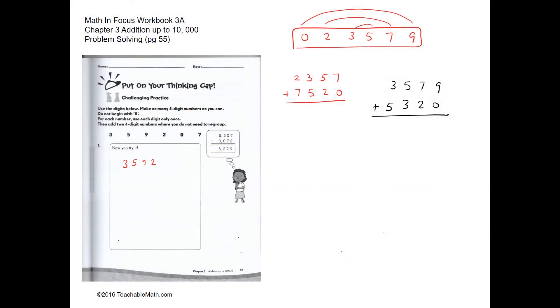The questions in the next two pages are about addition with and without regrouping. For this question, we have to add two-digit numbers that do not need to regroup. Over here, we have rearranged the digits 0, 2, 3, 5, 7, and 9 to form two four-digit numbers that do not regroup when adding them.